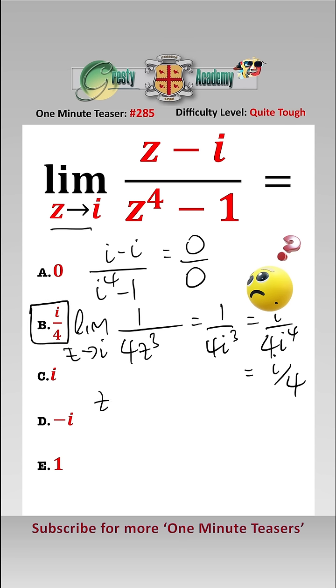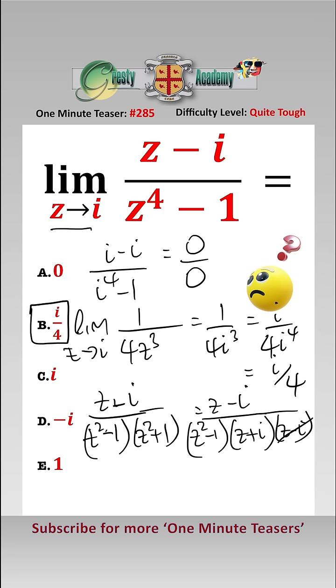We could also have done this by factorizing the bottom as z squared minus 1 over z squared plus 1, which equals z minus i over z squared minus 1 times z plus i times z minus i, and then the z minus i cancels.